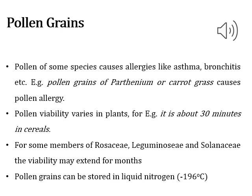Pollen grains vary in their viability. In cereals, viability lasts around 30 minutes, while in Rosaceae, Leguminosae, and Solanaceae it extends up to one month. Due to their hard coat, pollen grains can be stored in liquid nitrogen at around minus 196 degrees Celsius. This process is called cryopreservation.